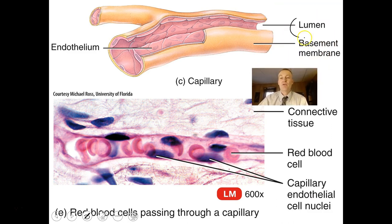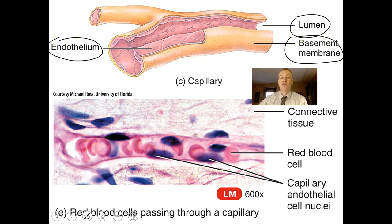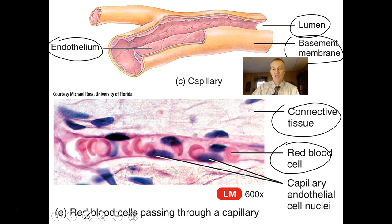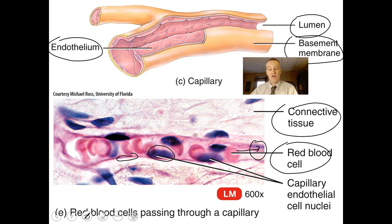A capillary has a lumen — the hollow space that the single layer of cells creates — covered by a basement membrane. All epithelial tissues sit on basement membranes. Red blood cells move through the capillaries, and you can see the nuclei of those cells making up the walls of the capillary.